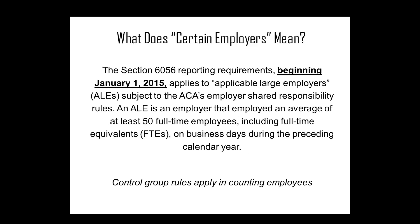Beginning January 1, 2015, all employers that have 50 or more full-time employees or equivalent full-time employees in the preceding calendar year — so 2014 if we're talking about the 2015 reporting period — are going to have to meet the 6056 and 6055 rules. One of the challenges is control groups. Many employers have different business ventures, and depending upon their level of ownership in those shared situations, employees of other companies may or may not push a company above the 50-employee threshold.